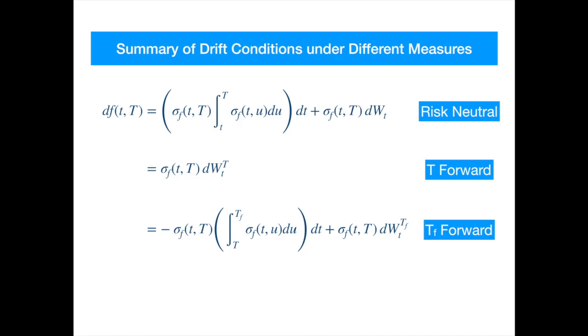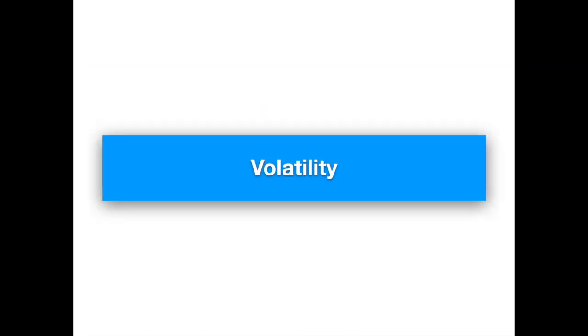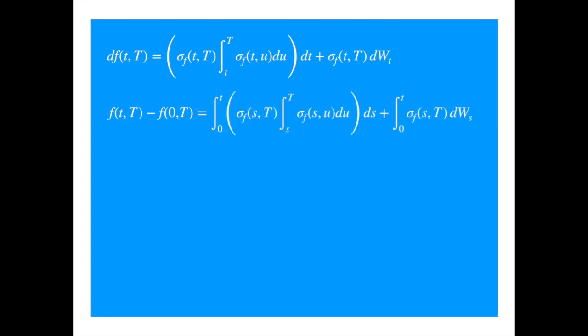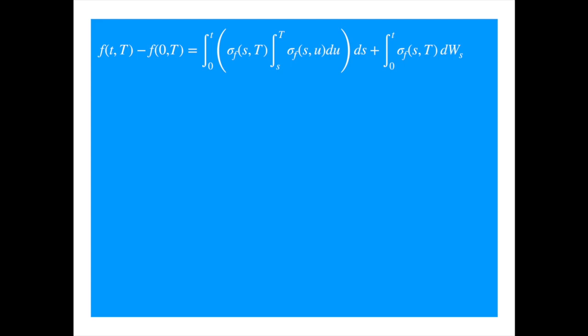In a nutshell: under the risk neutral measure the drift has the integral over the remaining maturity; under the T forward measure the drift is zero; under a longer maturity zero coupon the drift has the integral running from the maturity of the forward to the maturity of the numeraire. Whatever probability measure you work with, volatility is the king because it pretty much drives the dynamics of the instantaneous forward. Given the importance of volatility, let's discuss how it drives the dynamics of the instantaneous forward.